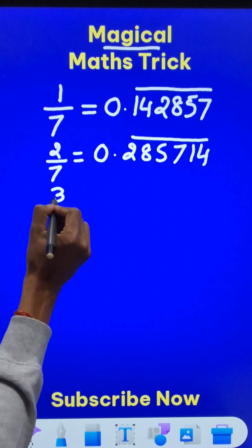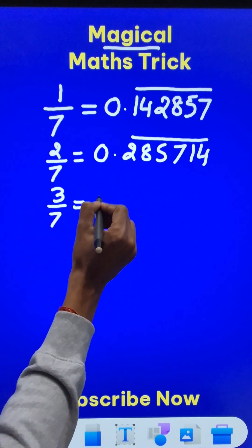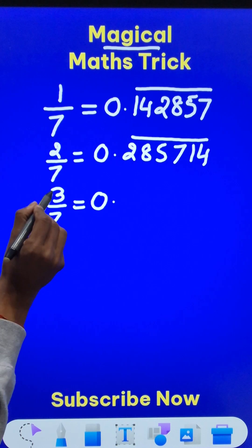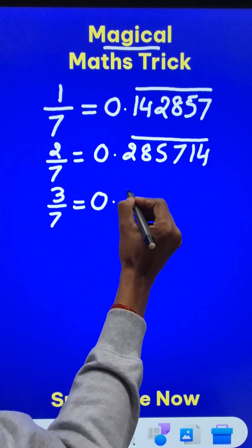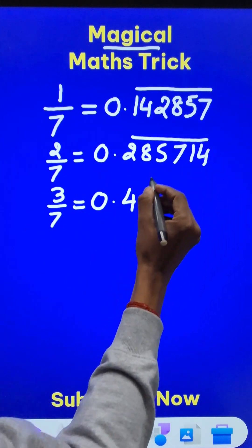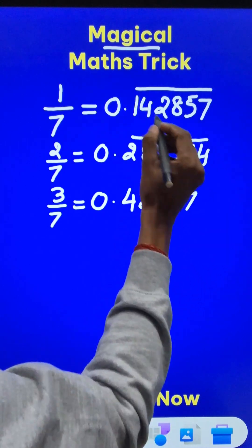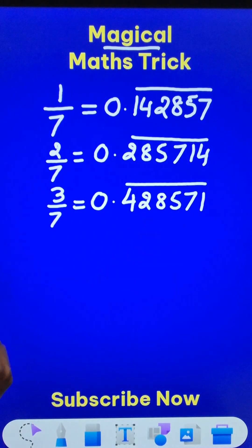You can test it with 3 by 7 also. 30 by 7 will give you 7 times 4 equals 28, so start with a 4 here, then go to the right hand side: 4, 2, 8, 5, 7, and then come back and write the number 1. These 6 digits are going to repeat.